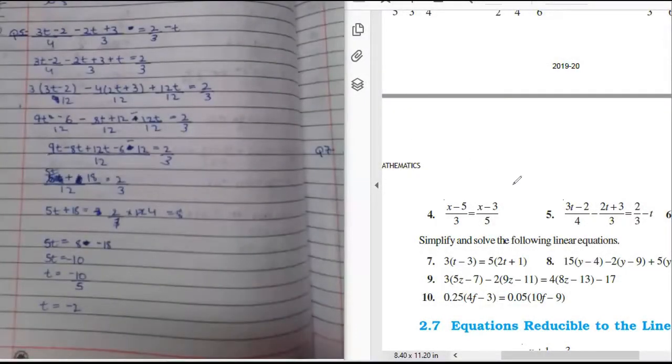So our next question is question number 5, this 3t minus 2. This is one of the very important questions. Let's see how you have done. You have taken this p to the other side, so this is plus t.